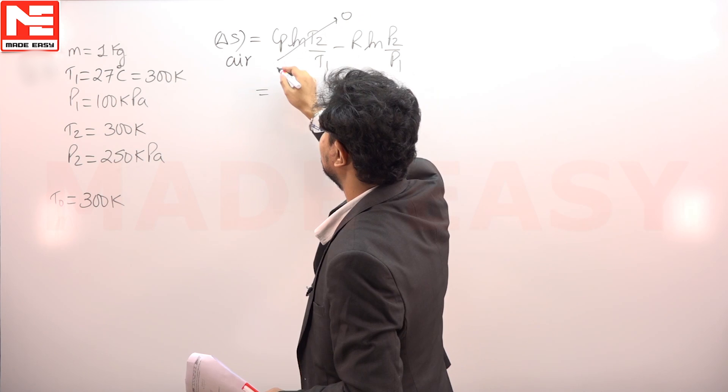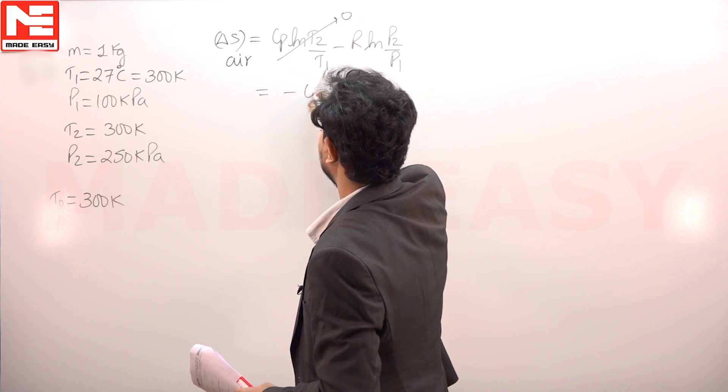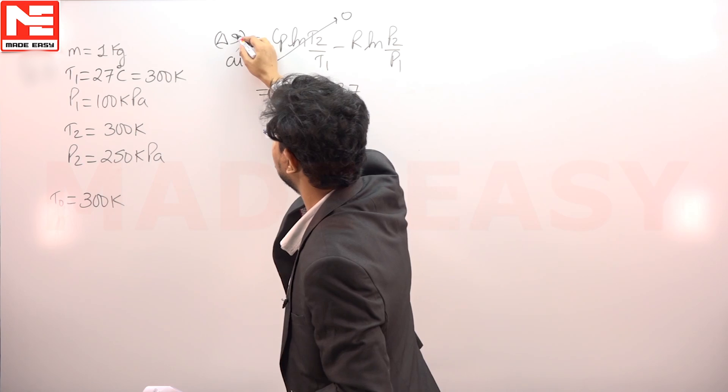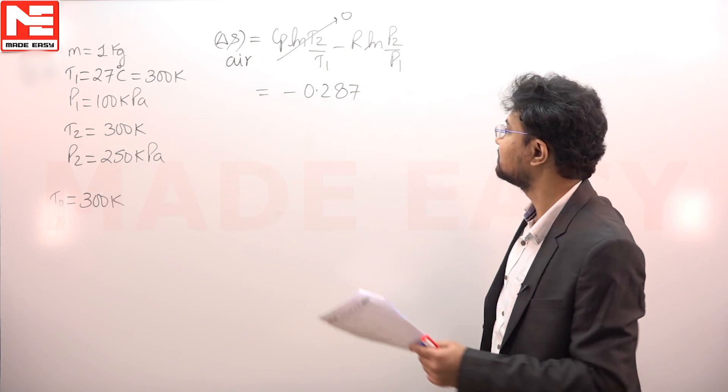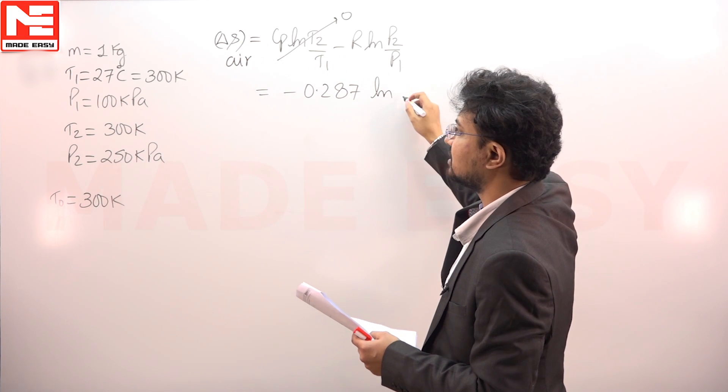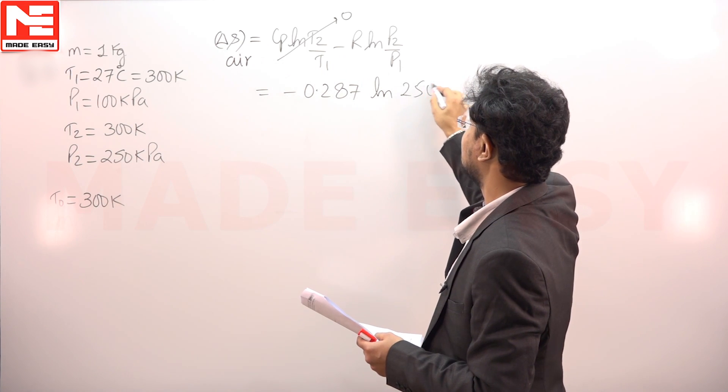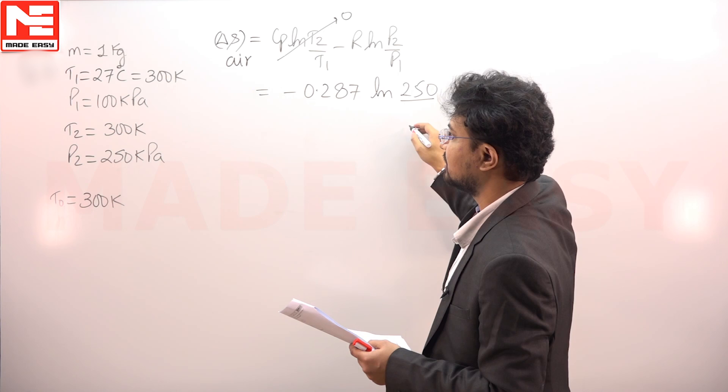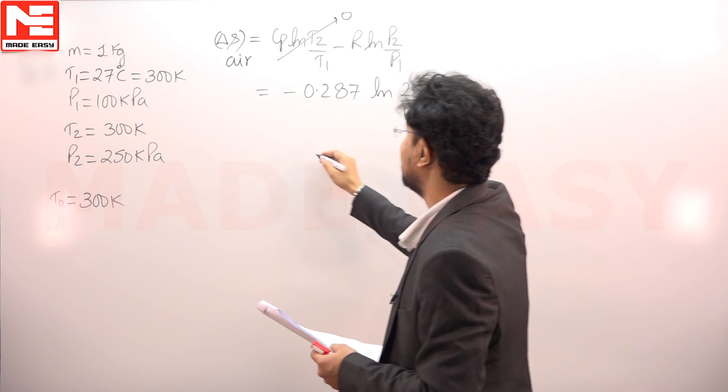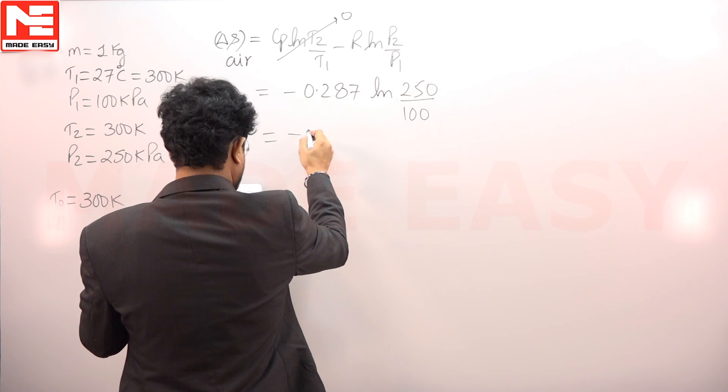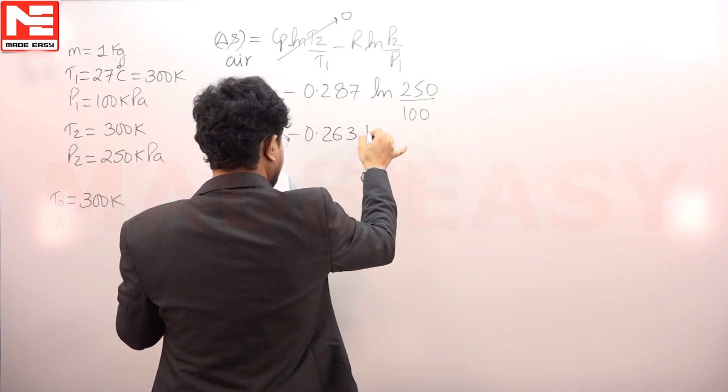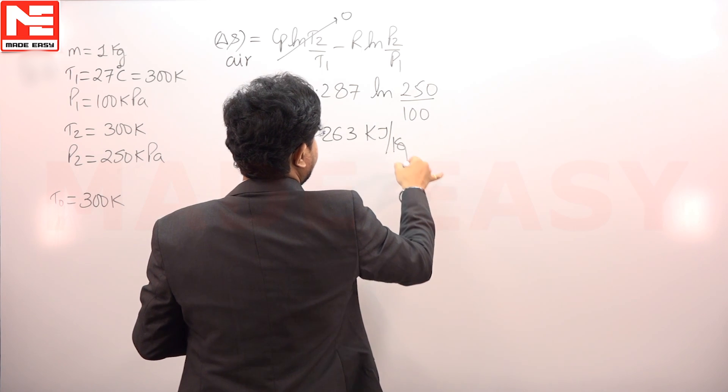This will be equals to minus R, that is 0.287, mass is 1 kilogram. This formula is for per kg of the entropy change. Log of final pressure is 250 kilo Pascal and the initial pressure is 100 kilo Pascal. The entropy change of the air comes out to be minus 0.263 kilojoule per kilogram Kelvin.